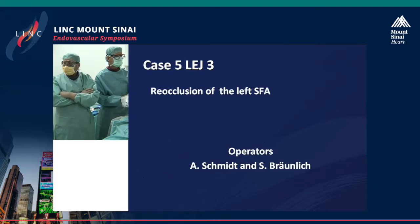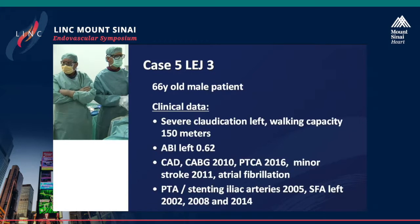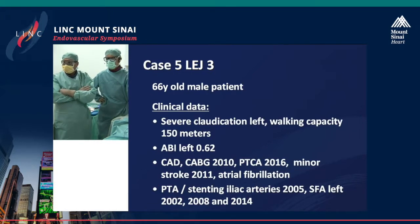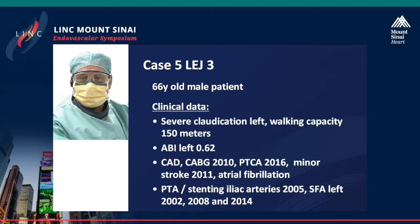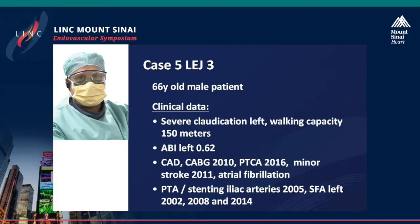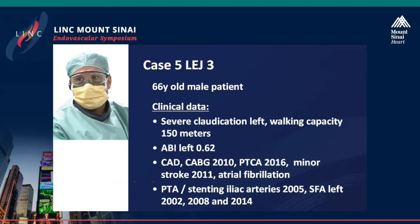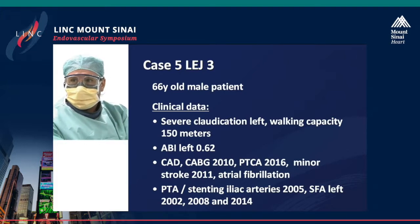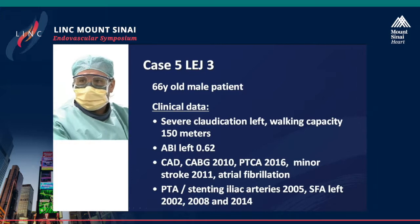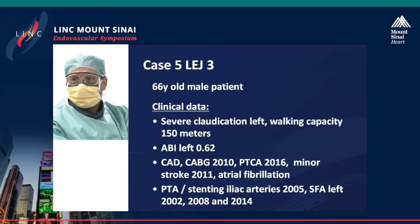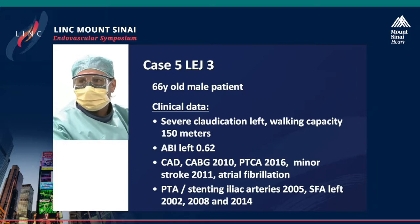It's a male patient, 66 years old. He presents with claudication on the left side, 150-meter walking capacity. ABI is 0.62. He had already coronary heart disease with CABG in 2010, and PTCA in 2016, also a minor stroke.